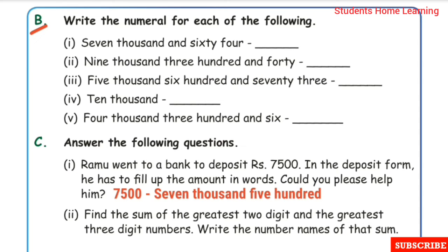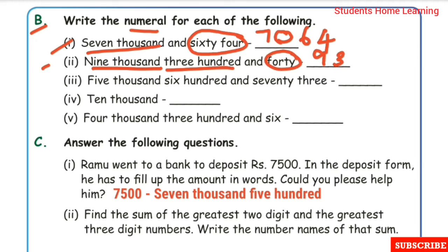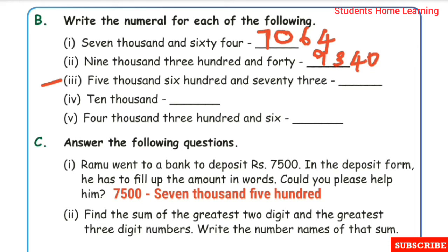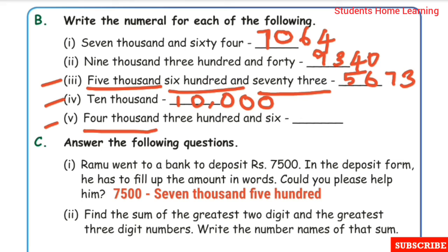Part B: Write the numeral for each of the following. That means write numbers from number names. Seven thousand and sixty four: 7,064. Five thousand six hundred and seventy three: 5,673. Ten thousand: 10,000. Tens place is 0, ones place is 6: the answer is 10,006.